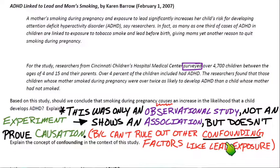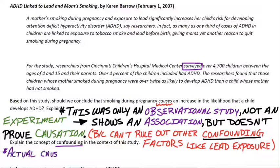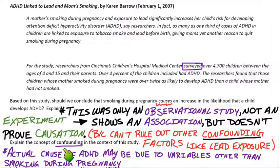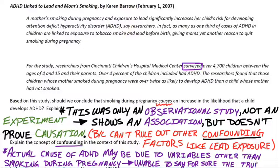Confounding variables are why we can't distinguish whether it's the smoking, the lead, or any other factor. Confounding almost means 'confusing' — we're confusing more than one variable at a time. For this study, the actual cause of ADHD in the kids may be due to variables other than smoking, and we just can't prove exactly which variable it is. That's confounding: we're confused by multiple factors and can't distinguish which one is truly responsible, especially because it's an observational study.